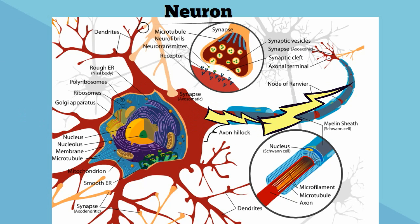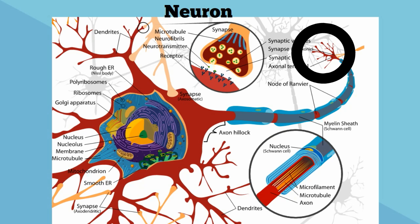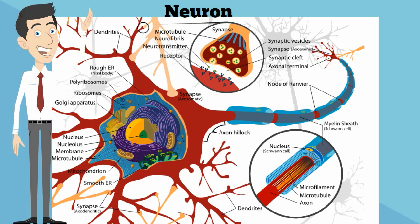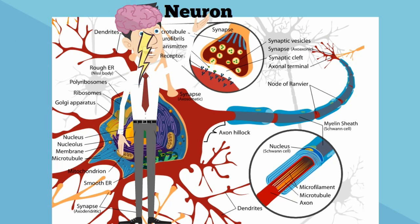An axon has insulation called a myelin sheath. At the end of the axon you have an axon terminal that communicates with dendrites of other cells. This allows electrical signals to pass and flow throughout your body.